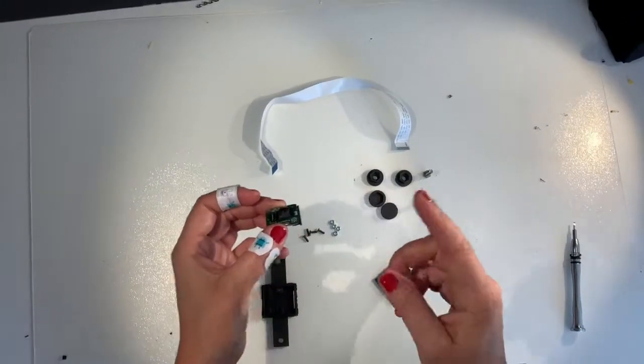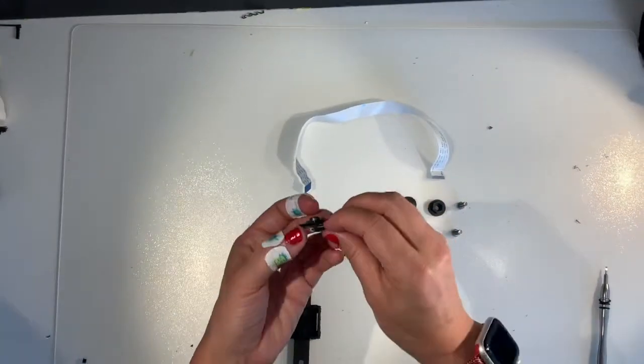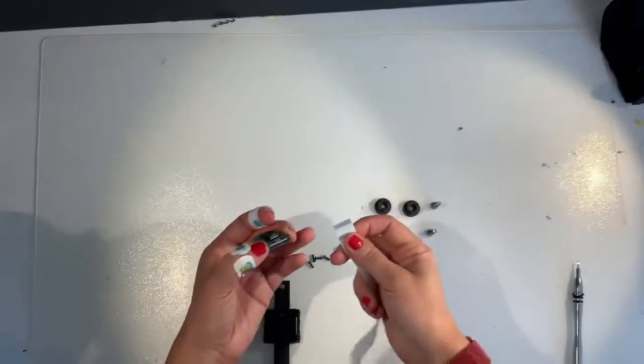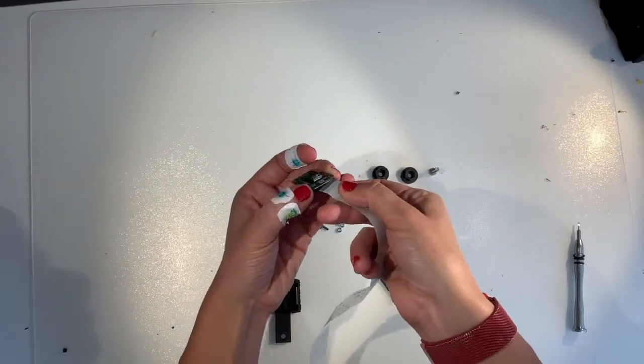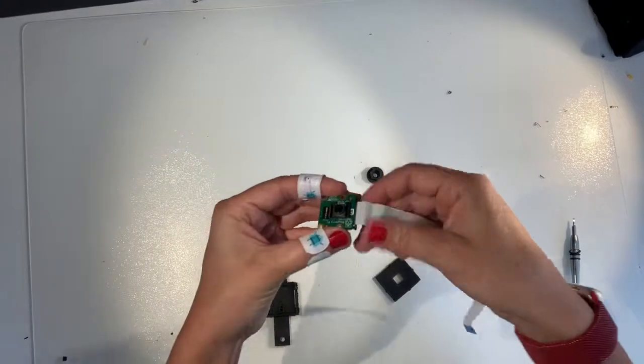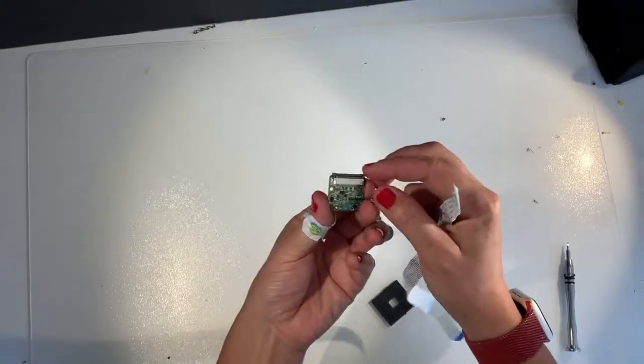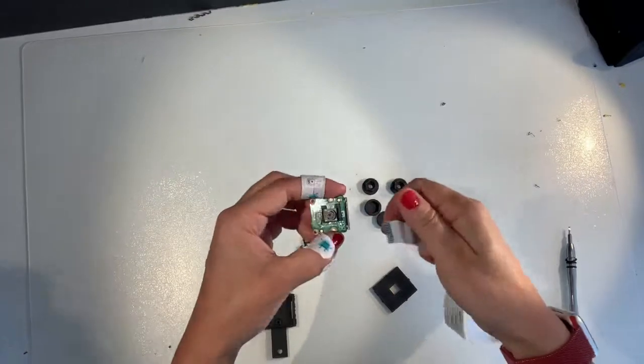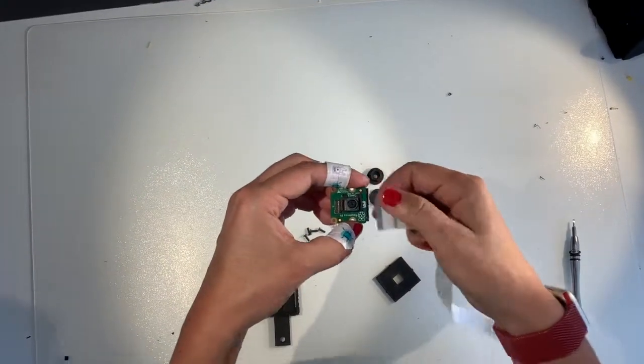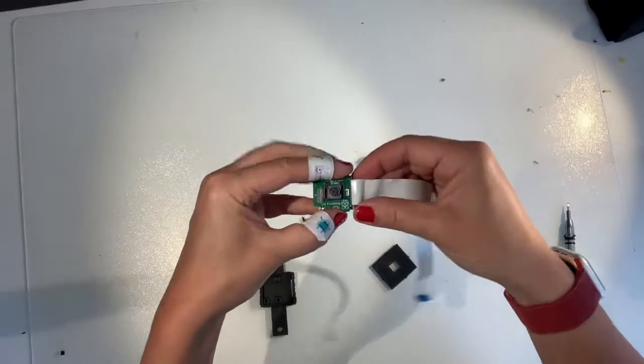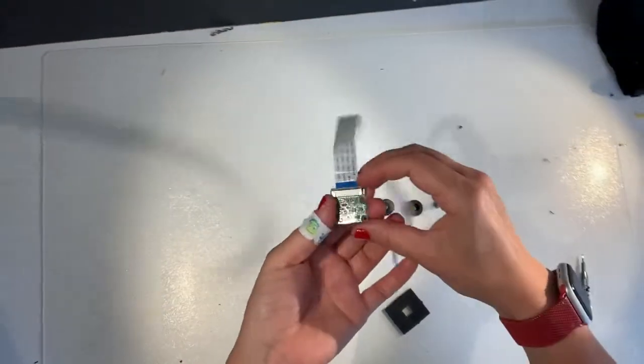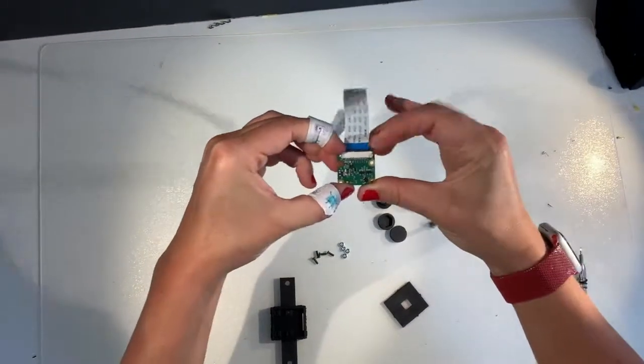Next step please connect the flex cable. Make sure that you connect it metal contacts to metal contacts like this. You'll need to open this holder for the cable first. Then slide in the cable and then press the holder until it clicks in.